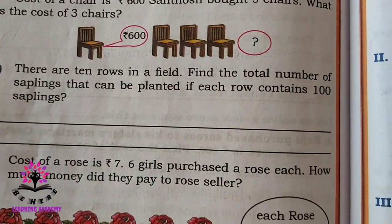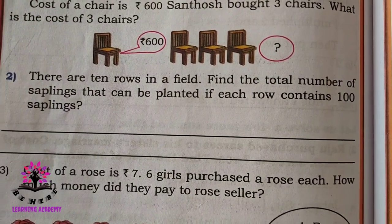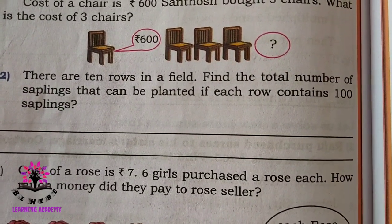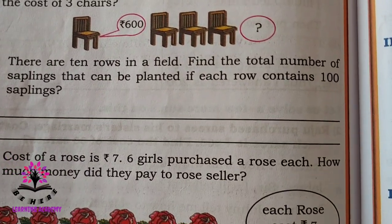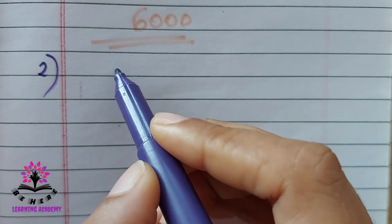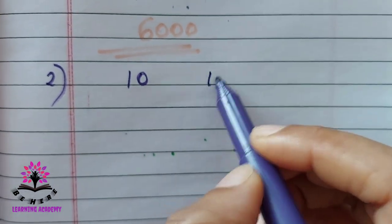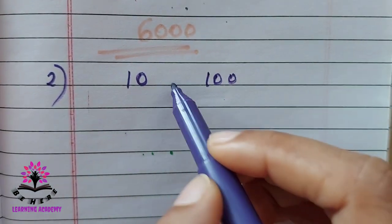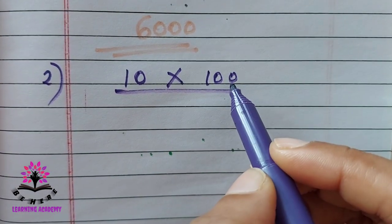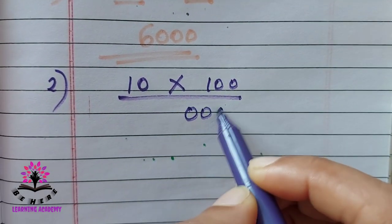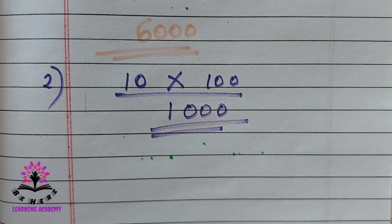There are 10 rows in a field. Each row contains 100 saplings. Find the total number of saplings. There are 10 rows and 100 saplings in one row, so multiply them. Count the zeros: there are three zeros, and 1 times 1 is 1. The answer is 1000.